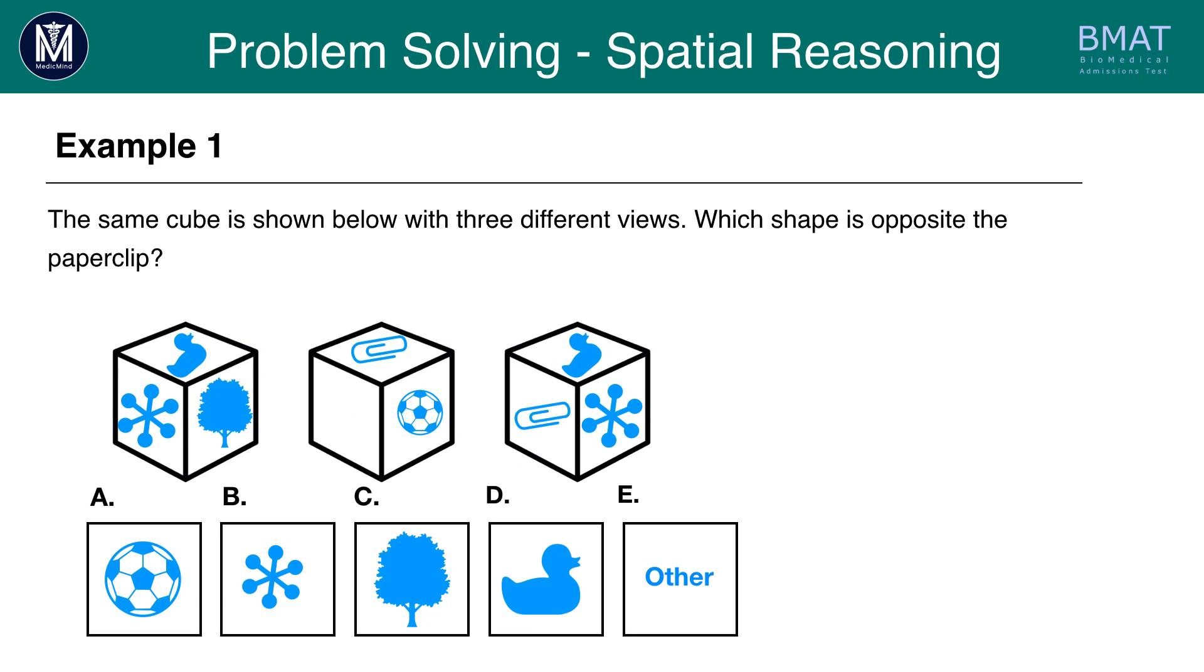So, the answer you should have gotten here is C. Now, a good thing to note here is if you can see a shape that is on the same illustration as the paper clip then you know it can't be opposite to it because it has to be adjacent to it. This means we can rule out the football, the science shape, and the duck. So, that's A, B, and D. That leaves us with C anyway.